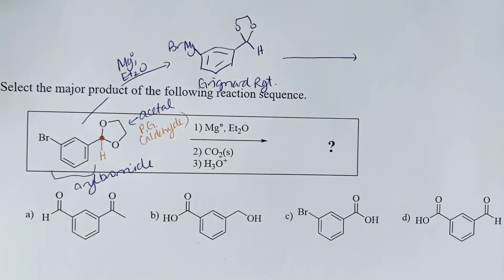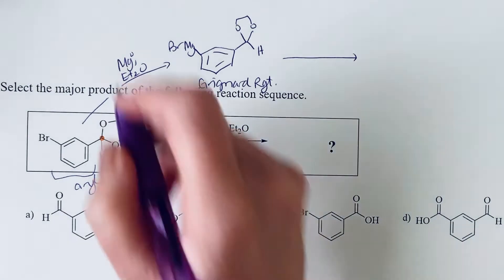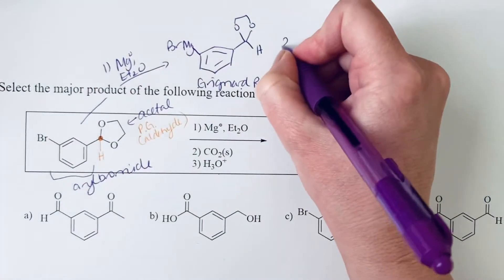And so Grignard reagents, we typically see these, they can react with acidic hydrogens. That's not normally what we're going for. We're normally trying to add it to an electrophilic carbon. And so that's what we have here in this two-step process. That was the first step.